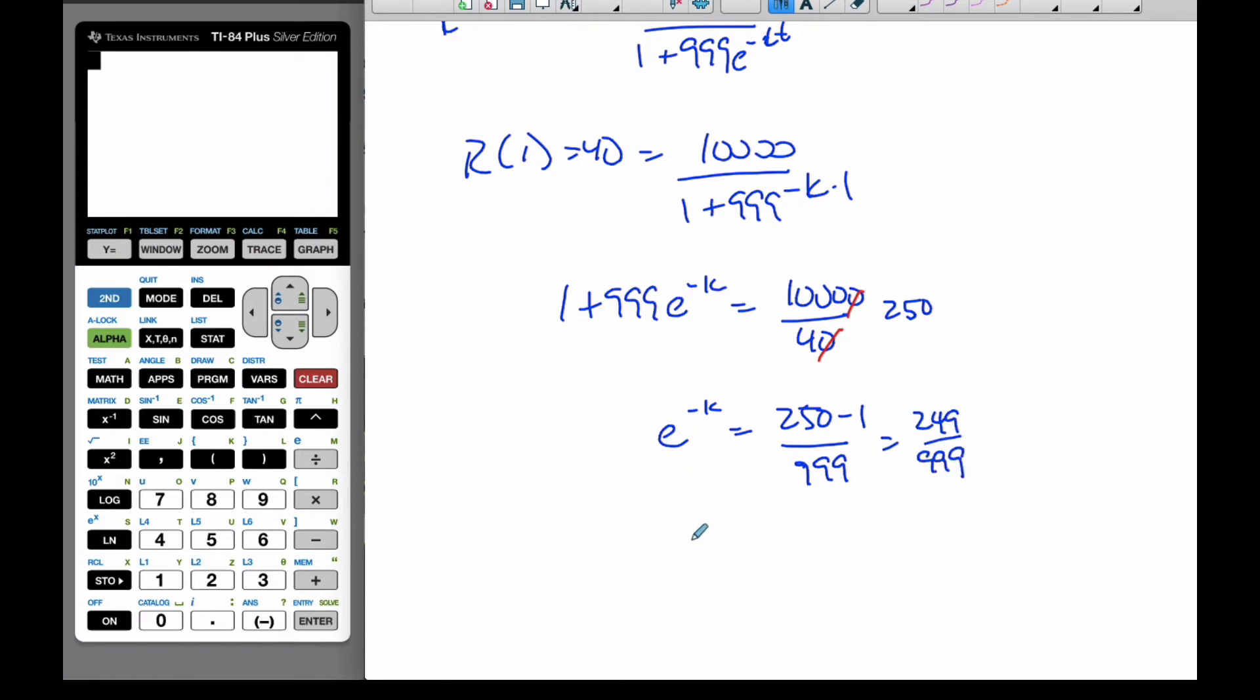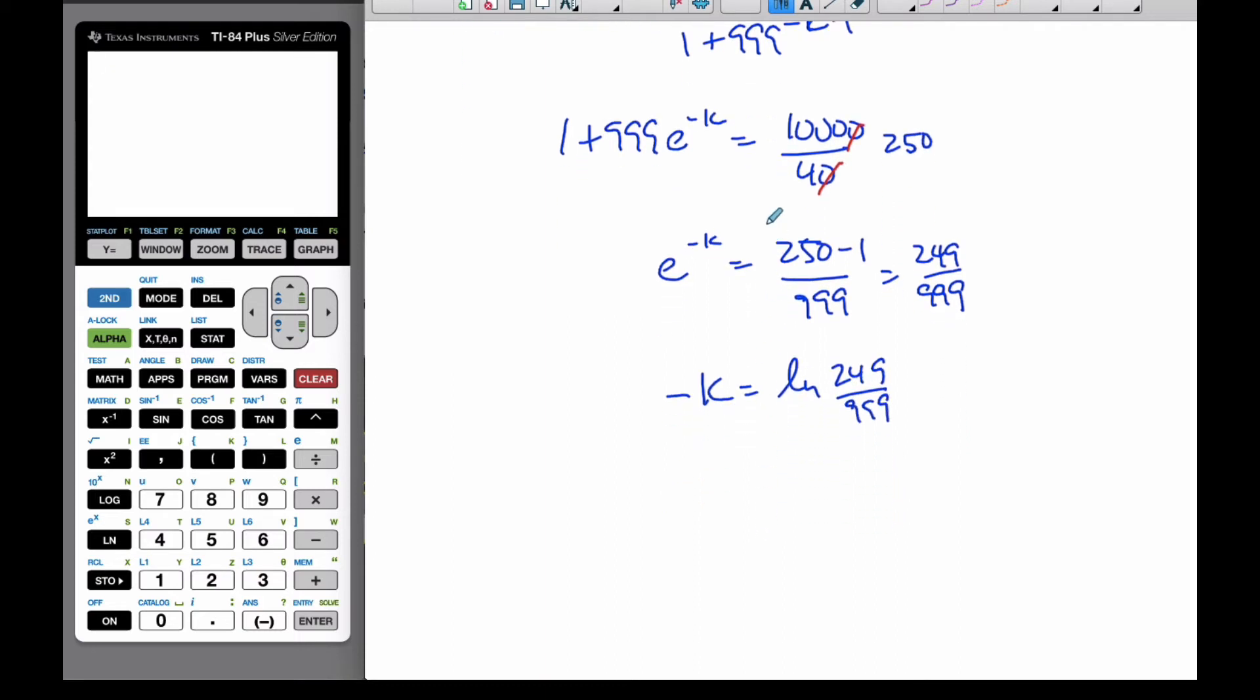And so, now, to get K, I can do the natural logarithm, I say negative K is equal to the natural logarithm of 249 over 999. And so, K, I can move the negative sign over, K is going to be negative this logarithm here. And so, put it all together.